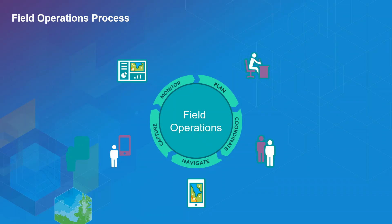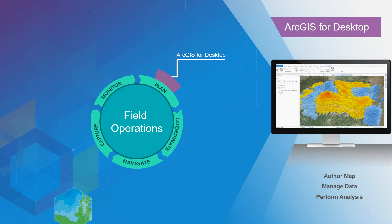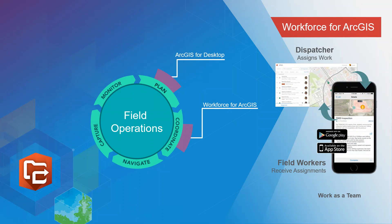Field operation is now a five-step process. We're able to plan by authoring the maps and data we want to work on, and extend to the field by publishing them to ArcGIS Online or ArcGIS Enterprise. We have a number of new applications that allow us to optimize our field operations, and one of those applications is Workforce for ArcGIS.